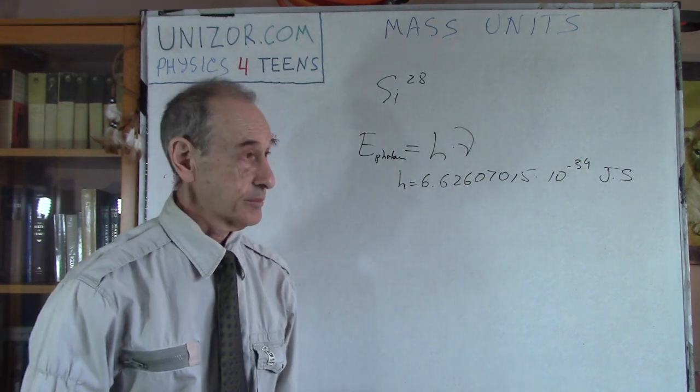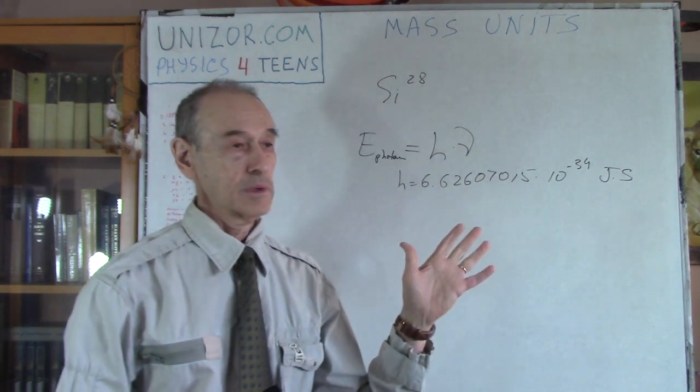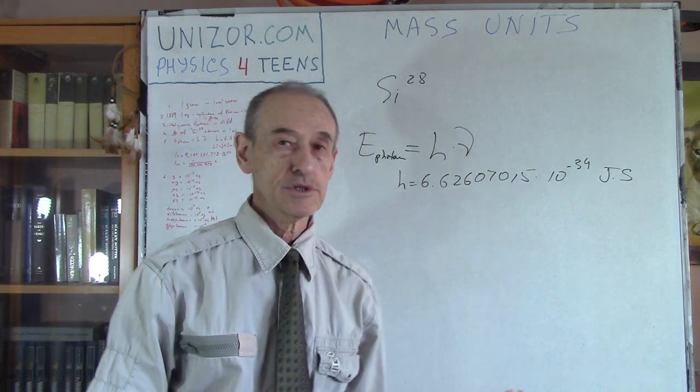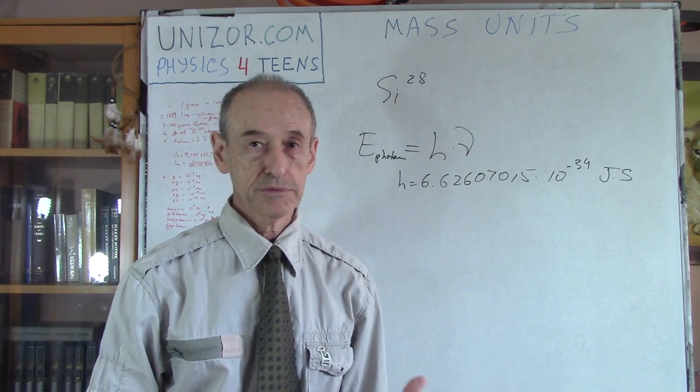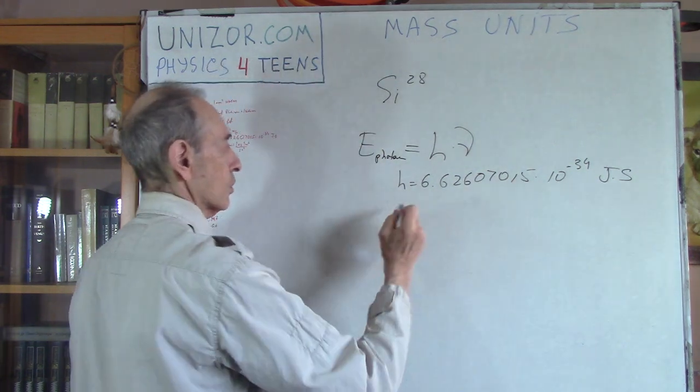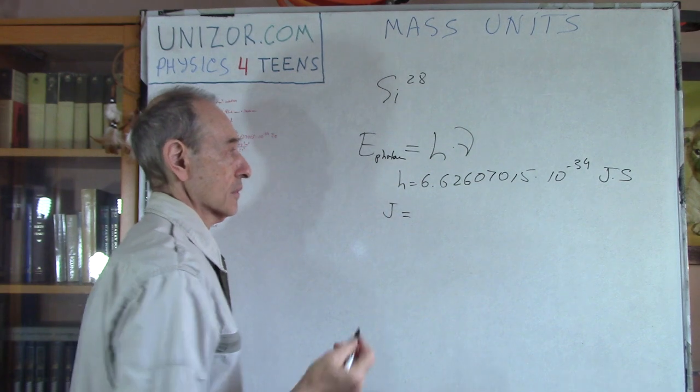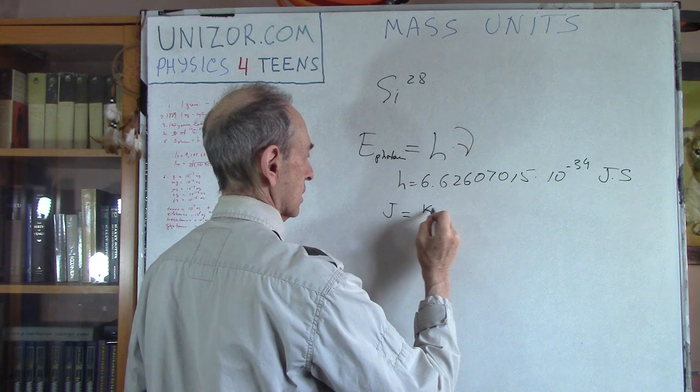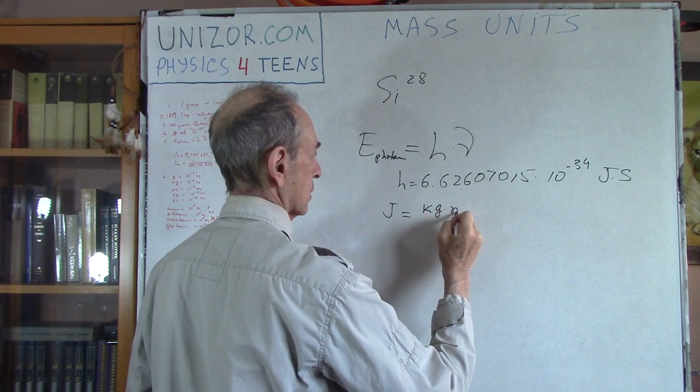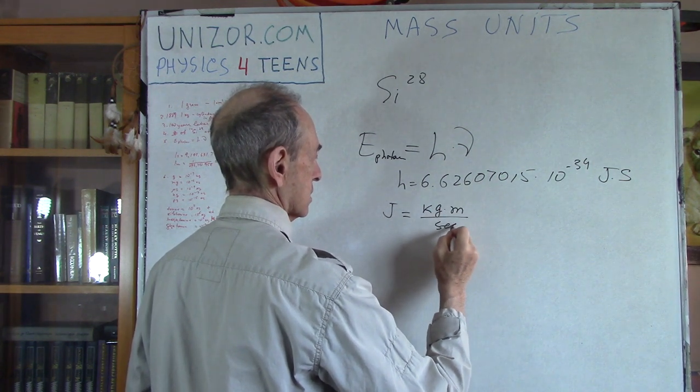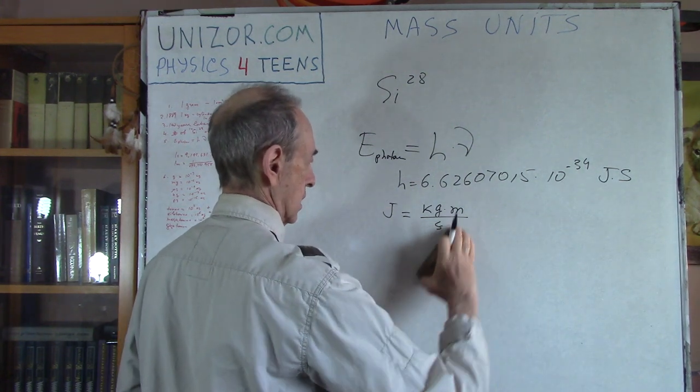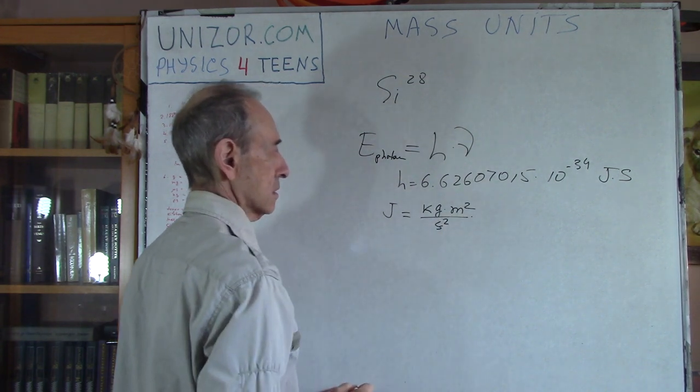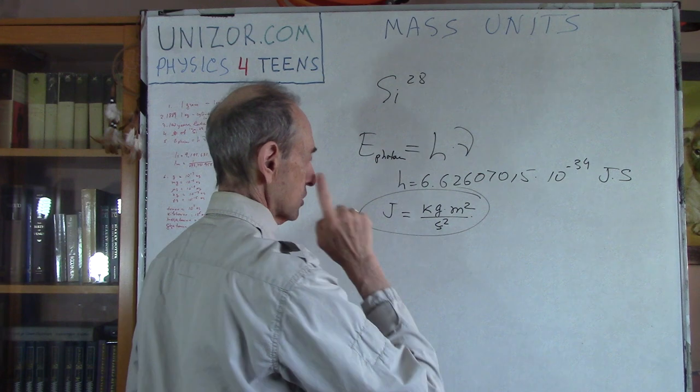Okay. So, now, they have decided that this constant is better suited for definition of the mass. Well, first of all, joule. What is joule? Joule is the energy measure, and it's a kilogram meter second, I use s, second square. That's the force times distance, right? So, that's the definition of joule.